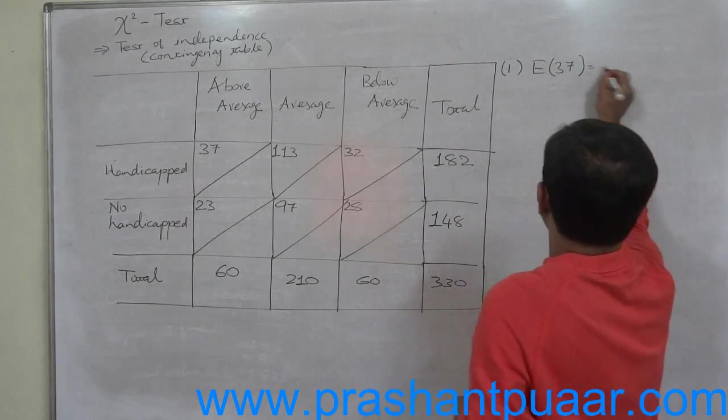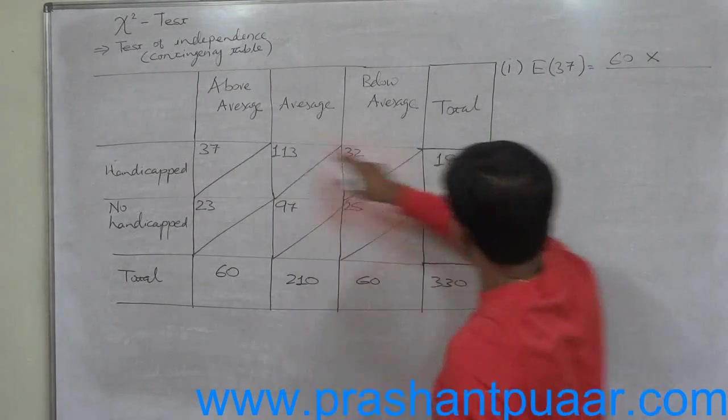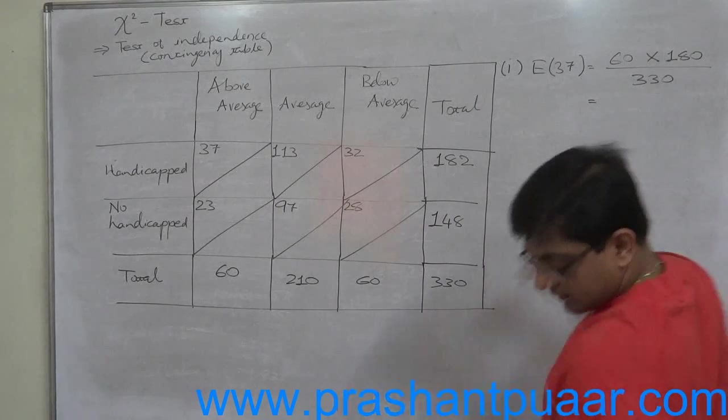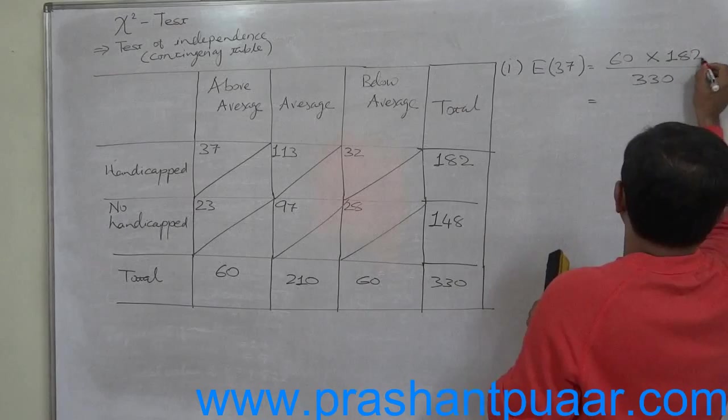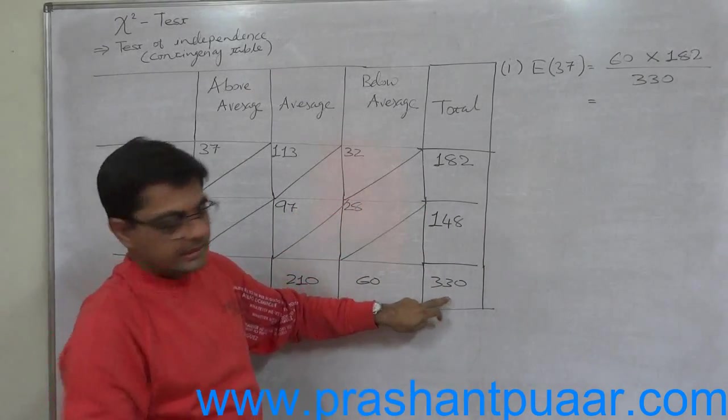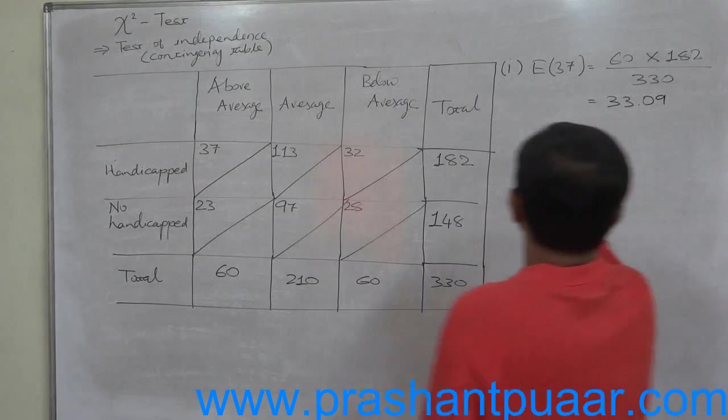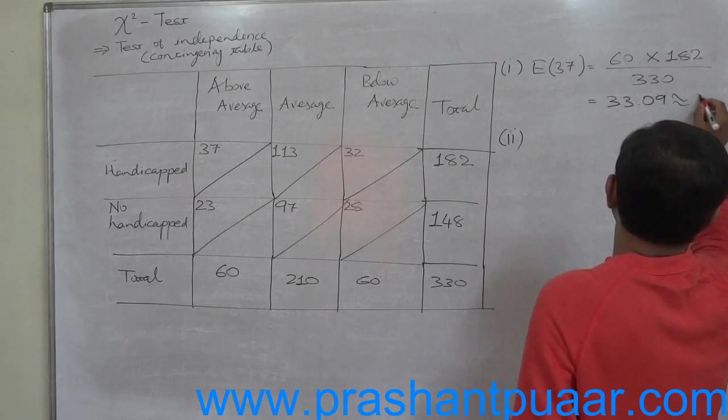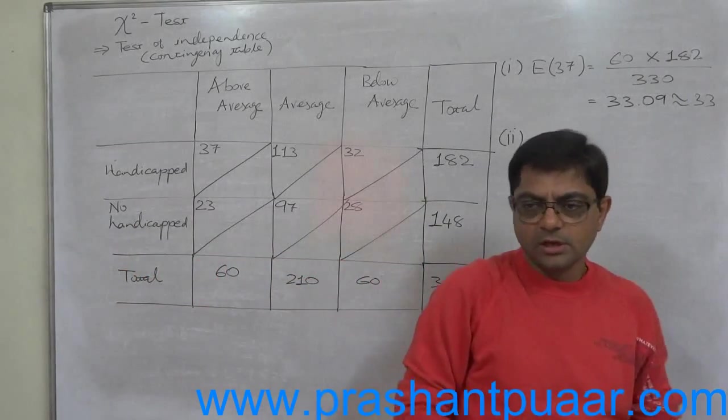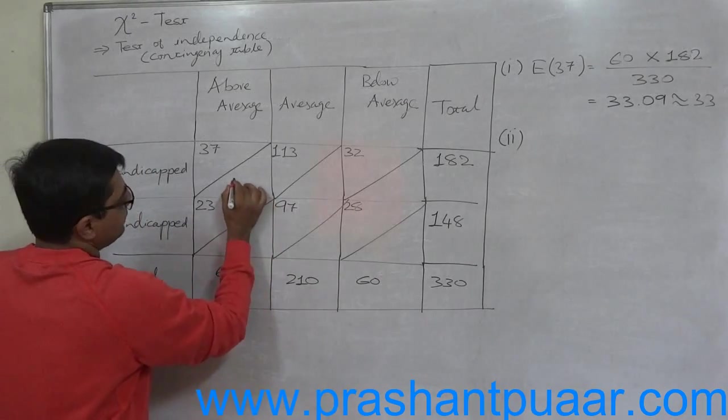Let us find out the expected frequency of 37 first. What we have to do is column total into row total divided by the grand total. Column total 60, row total 182, divided by grand total 330. Can you give me the answer? 33.09, which is approximately 33. Because frequencies are generally considered as integer numbers only, and observed frequencies or actual frequencies are always by nature integer values.